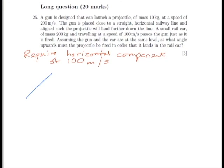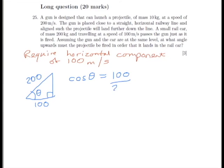We can begin by drawing a vector triangle. We want to find the angle theta. We know that the hypotenuse of this triangle is 200 — that is the launch speed of the projectile — and the horizontal component needs to be 100. We know the adjacent and the hypotenuse, so we should use the cosine. Cos theta equals 100 divided by 200, which is 0.5. The cos of 60 equals 0.5, so therefore our theta here is 60 degrees.